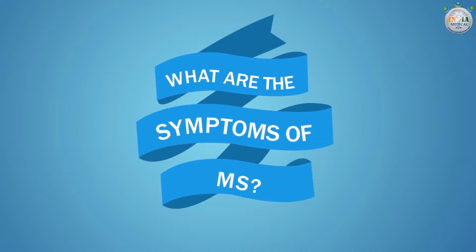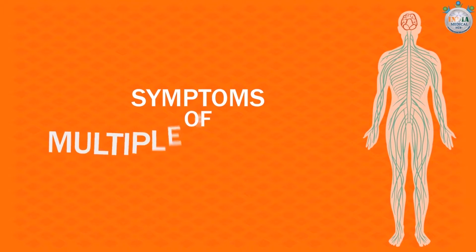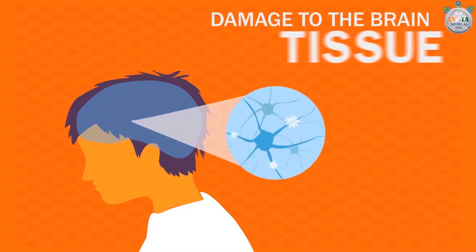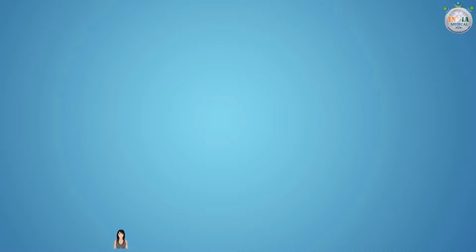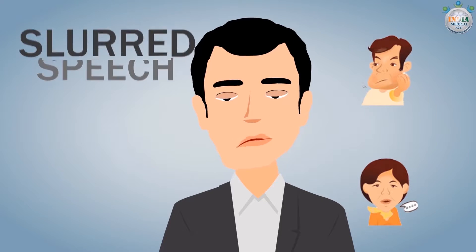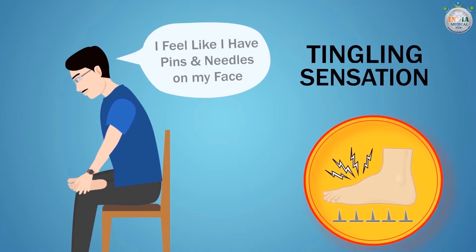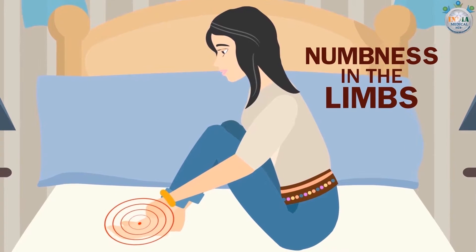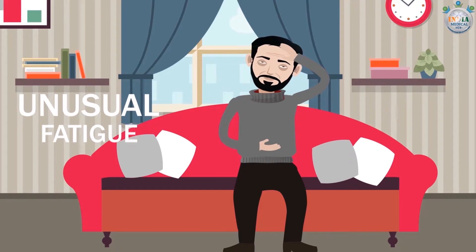What are the symptoms of MS? Symptoms of MS may vary depending upon where the damage to the brain tissue has occurred, and can range from blurred or double vision, slurred speech, tingling sensations, numbness in the limbs, and unusual fatigue.